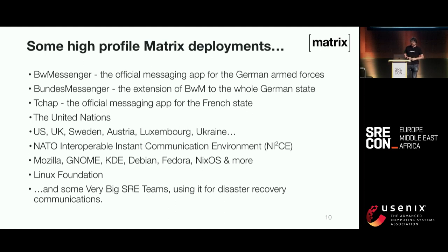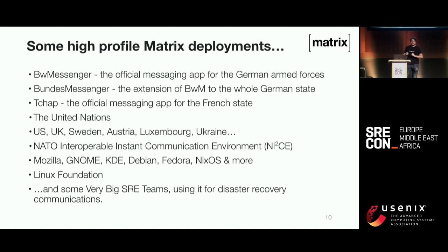A pattern we've seen is folks in the SRE community, including some very big ones, using Matrix as the disaster recovery system — so that if your day-to-day Teams, Slack, or Workspace goes down, or you can't trust it and want a cryptographically verified, decentralized thing where you've confirmed the identity of who you're talking to, with multiple replicas across your infrastructure, Matrix is a really good fit. We used to use IRC as the emergency out-of-band 'oh my god, everything's on fire' situation.